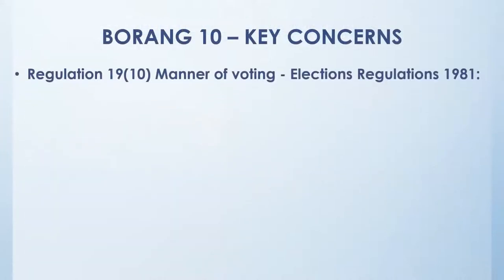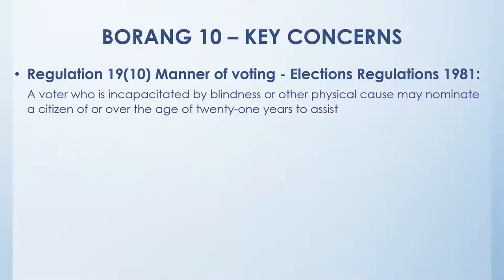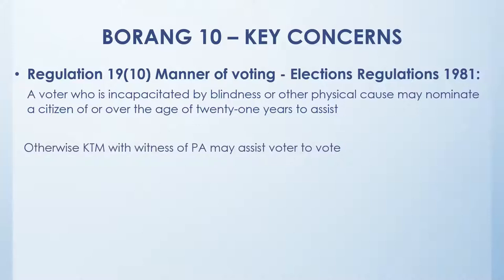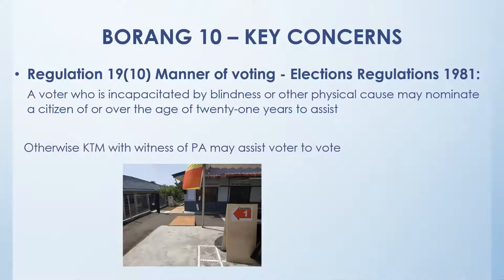Next slide. About Borang 10 — according to regulation 19(10), the manner of voting, you have a person called Orang Yang Dipercayai. A voter who is incapacitated and cannot vote by themselves, either due to blindness or they need assistance to walk to the voting station, can nominate a person to help them. That person needs to be a Malaysian citizen and over 21 years old. You can also have KTM help the voter under the witness of a polling agent.